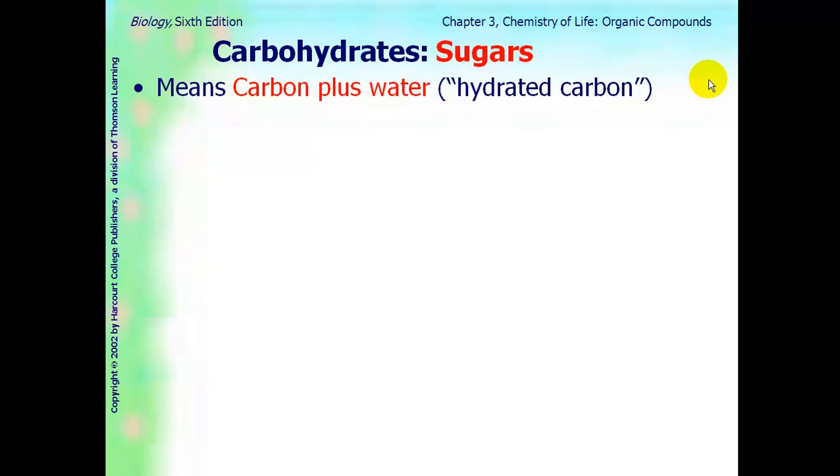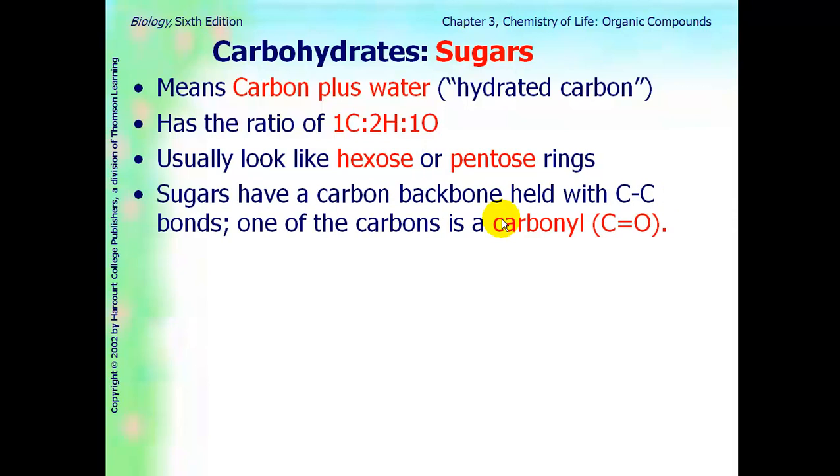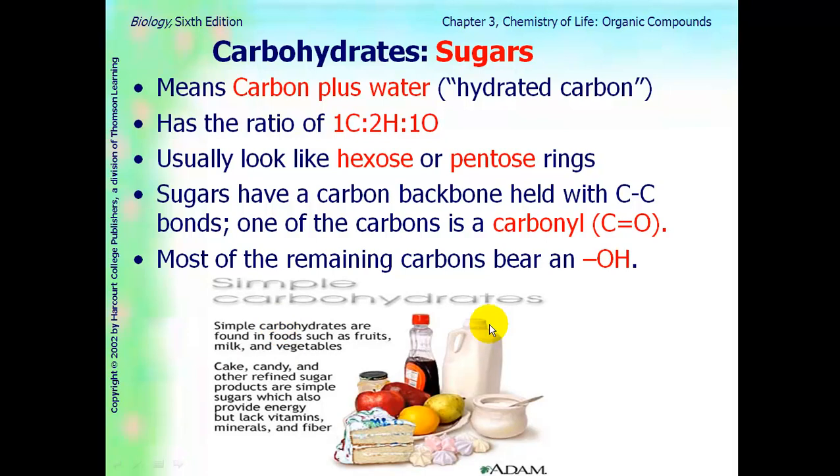The last topic for this podcast are carbohydrates. A carbohydrate is basically a sugar. You need to know what they are composed of and characteristics of them. Carbohydrate, that term means carbon, which you see from the carbo, plus water, which is hydrate. Hydrated carbon. It has a ratio, all carbohydrates have this ratio of one carbon to two hydrogens to one oxygen. It usually looks like hexose or pentose rings. Sugars have a carbon backbone held with carbon-carbon bonds. One of the carbons is a carbonyl, which means you will see a carbonyl group, a carbon bonded to an oxygen in all sugars. Most of the remaining carbons will have a hydroxyl group attached to them. As you've seen or learned in regular biology, simple carbohydrates are found in foods such as fruits, milk, and vegetables.